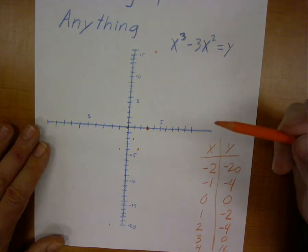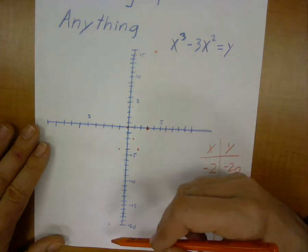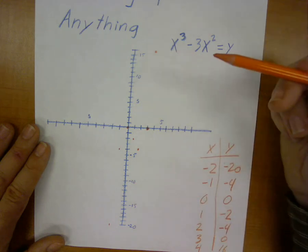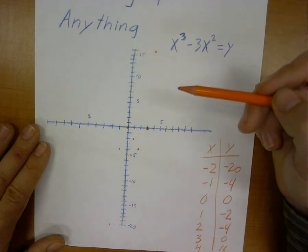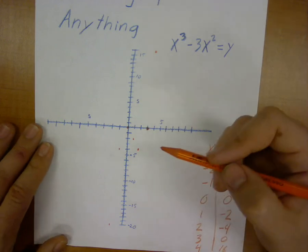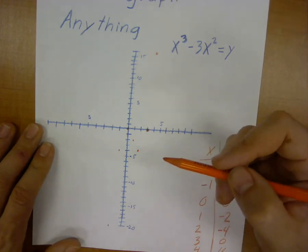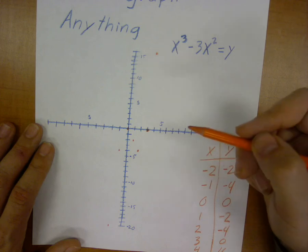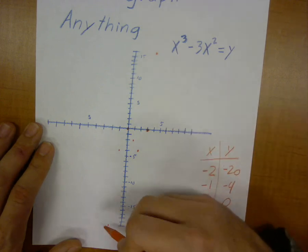Now, if I were to do some points in between, we could fill this in slowly but surely. That's how a computer does. A computer runs through every tiny little number and works it out. We don't need to do every single little point. We just need to do enough to get a general feel of what it looks like.